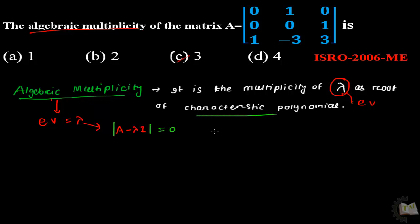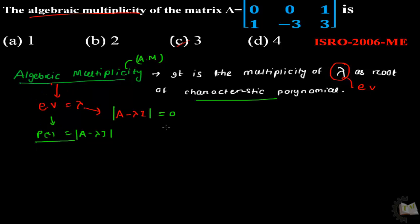What is the characteristic polynomial? If you write it as P(x), then after solving the determinant of A minus lambda I, you will get a polynomial. That is the characteristic polynomial. We will predict the algebraic multiplicity through this eigenvalue and characteristic polynomial. Sometimes we write it as AM, that is algebraic multiplicity.